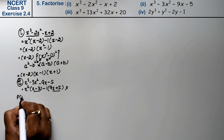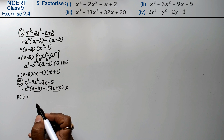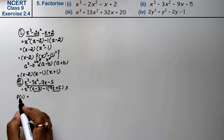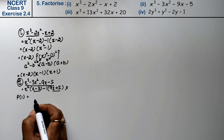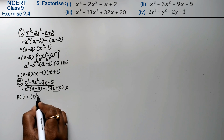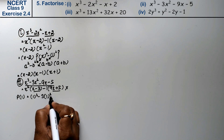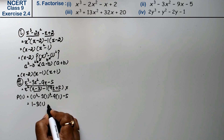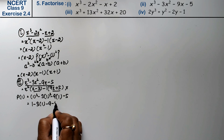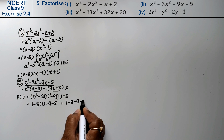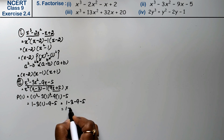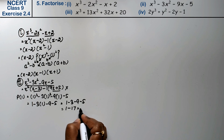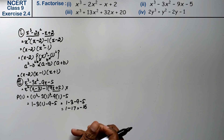According to the factor theorem, if we keep the value of x equal to 1 and f(x) equals 0, we check if it is a factor. So: 1 cubed minus 3 times 1 squared minus 9 times 1 minus 5 equals 1 minus 3 minus 9 minus 5, which equals minus 16. So 1 is not a factor.